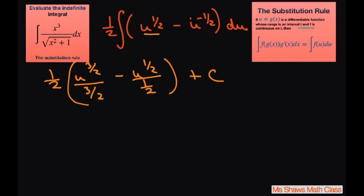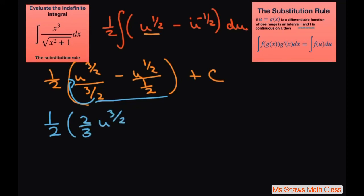Let's simplify. Dividing by the fractions brings the denominators up: so we get 1 half times the quantity 2 thirds u to the 3 halves minus 2 u to the 1 half, plus C.